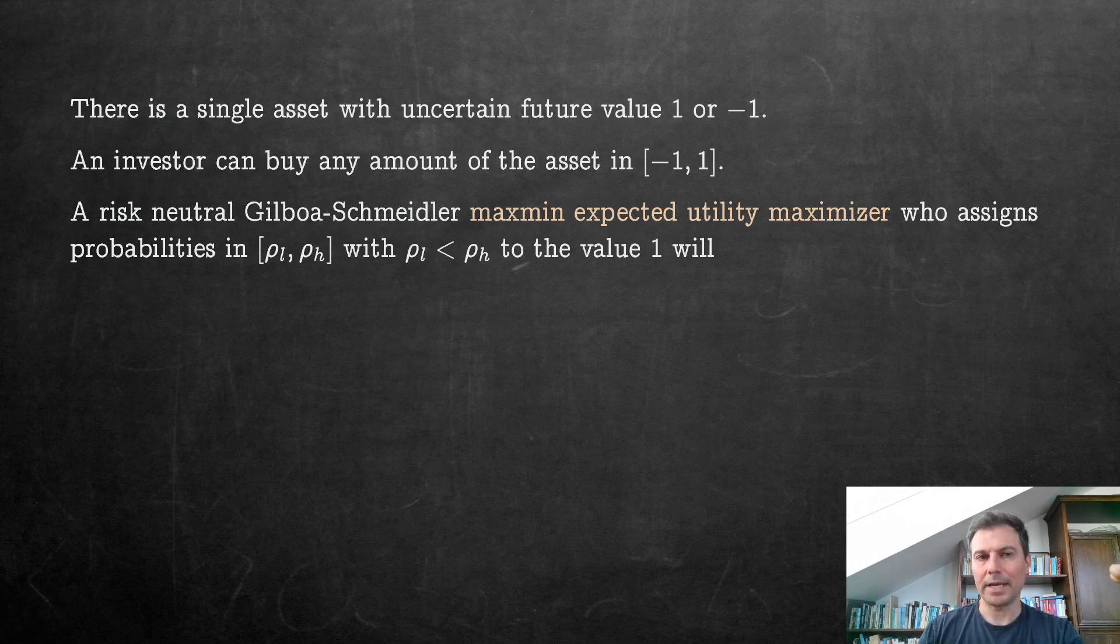Let's go back. We're in the same setup, but now we have a risk-neutral Gilboa-Schmeidler max-min expected utility maximizer, for instance, and this person assigns probabilities in this space, in this set ρ_L to ρ_H, so in an interval, so it's a range of priors to the value 1. And this person will then do what?